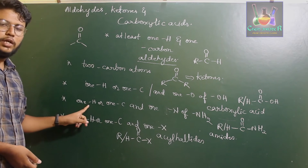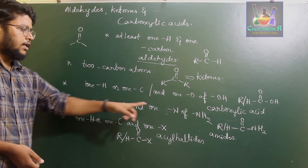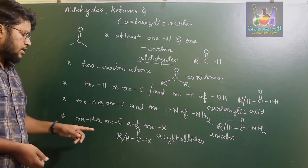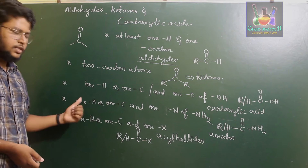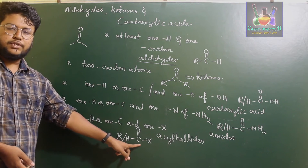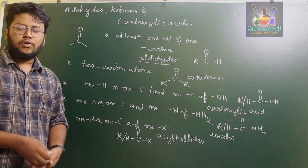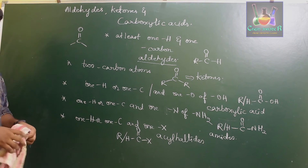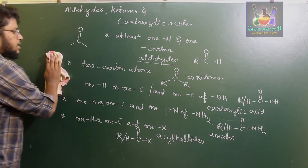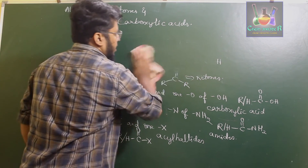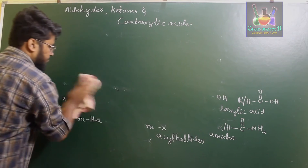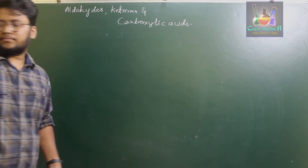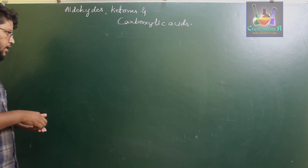If the carbonyl carbon is attached to one hydrogen or carbon on one side and to the nitrogen of an NH2 group on the other side, then those are called amides. If it is attached to hydrogen or carbon on one side and bonded with a halogen atom on the other side, then those are called acyl halides. There are also two more important carbonyl group derivatives: esters and anhydrides, which are derivatives of carboxylic acid.